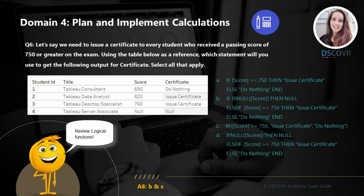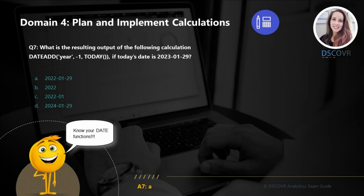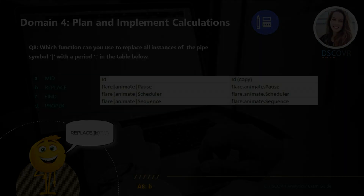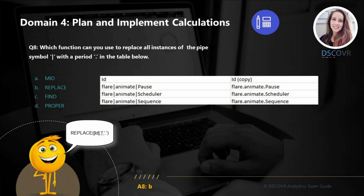As you've seen from the questions so far, you will be required to have a deeper understanding of many different functions. For question number seven, we need to figure out the resulting output of the following calculation — the answer is A. We're looking at today's date, 2023-01-29, and subtracting one year from it. In question eight, we need to replace all instances of the pipe symbol with a period in the table below, and for this we can simply use the REPLACE function.